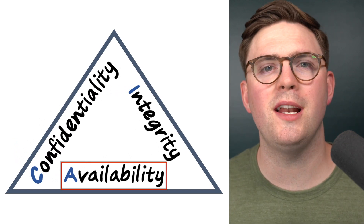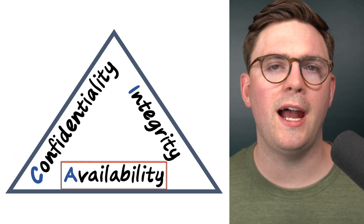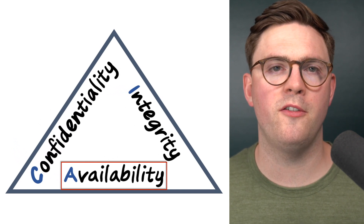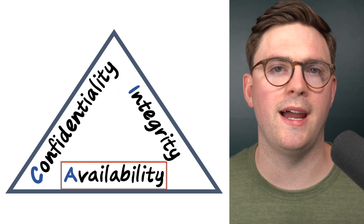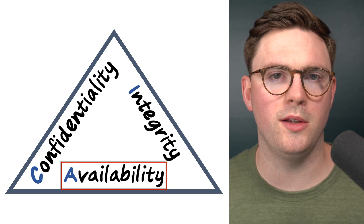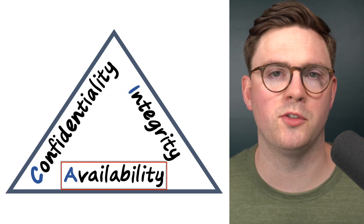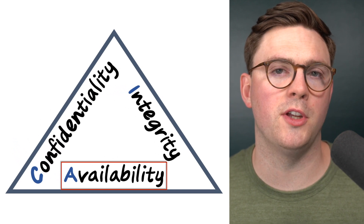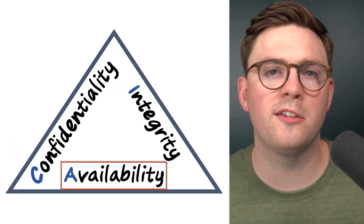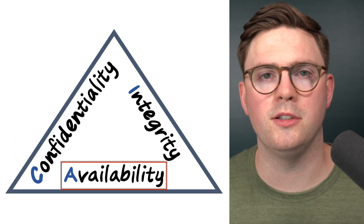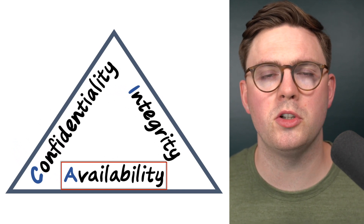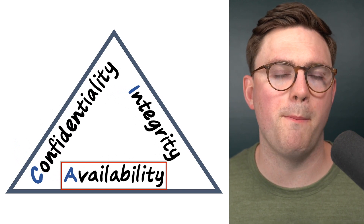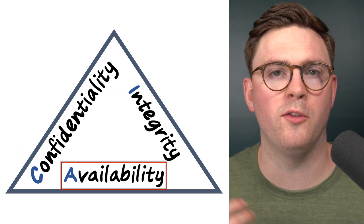Our last principle is availability — how do we ensure that our information, data, and systems are available to the authorized users that need to access them. If somebody tried to do a denial of service attack, how do we ensure we have distributed denial of service protection to stop those attacks. It also means ensuring resources like virtual machines are patched and protected from malware and vulnerabilities.